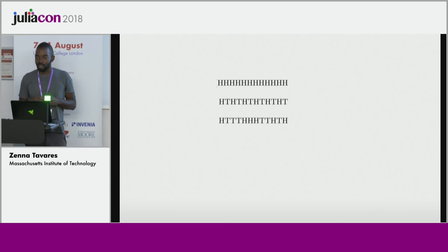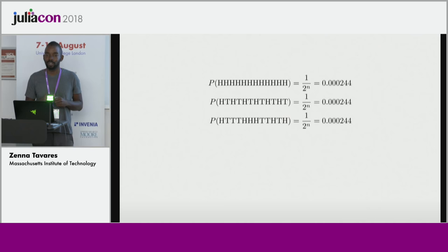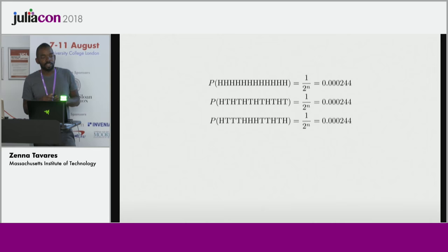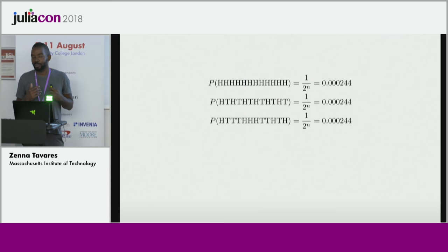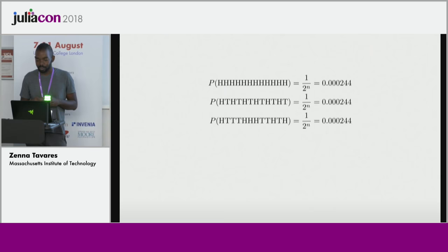This is strange because assuming the coin is fair, each of these sequences is equally likely. So why do the first two make us suspicious while the last one seems reasonable? The answer comes down to that assumption: 'assuming the coin is fair.' We don't actually assume the coin is fair — we have a belief over whether the coin is fair. The Bayesian approach is to have beliefs over everything; we should never be too sure about anything.